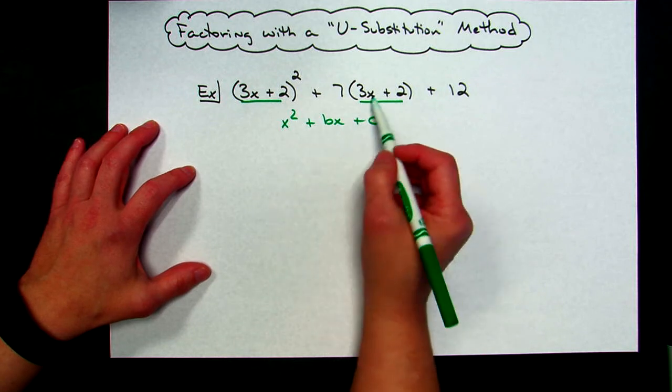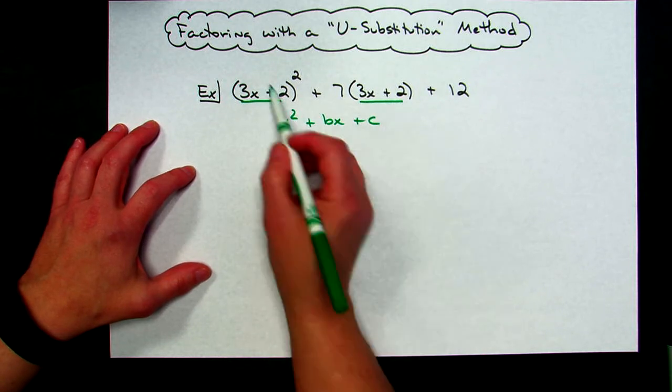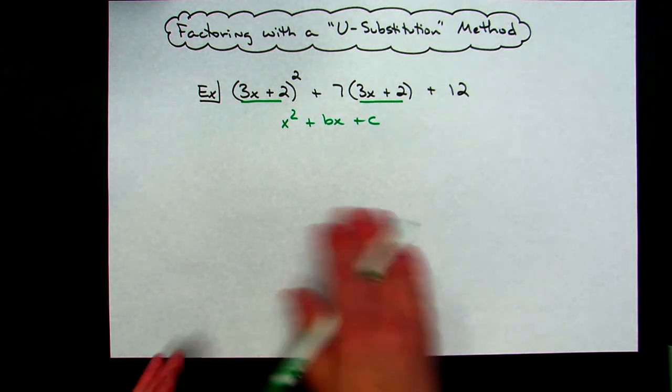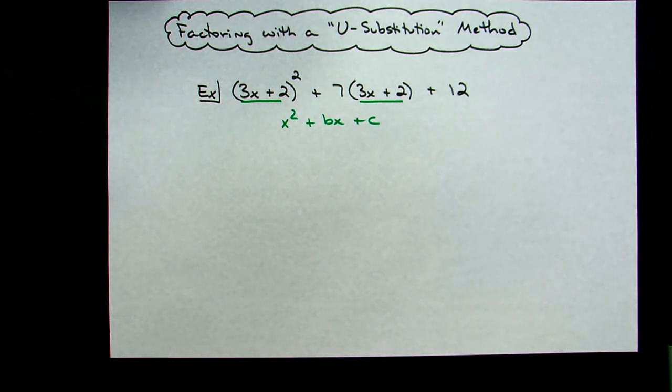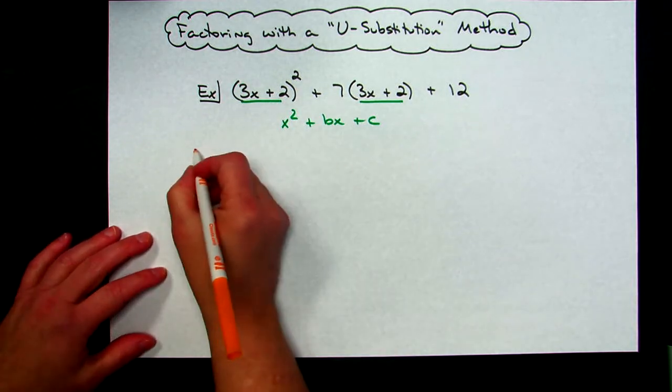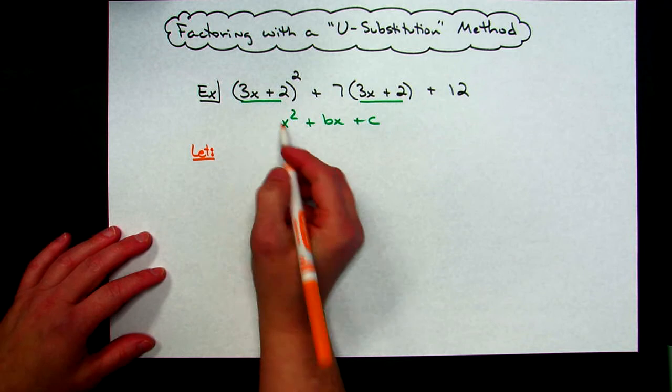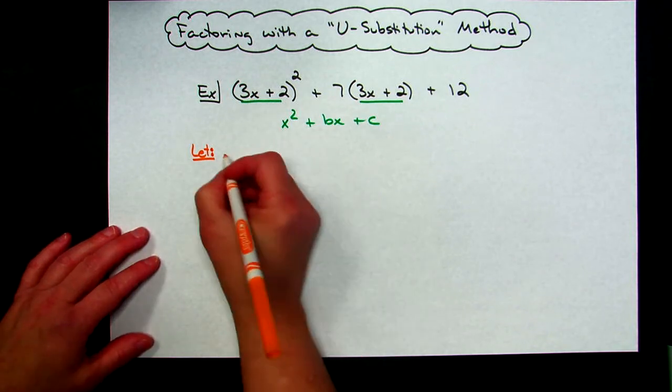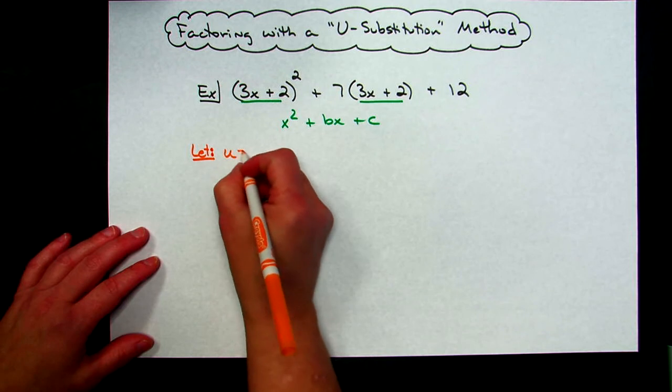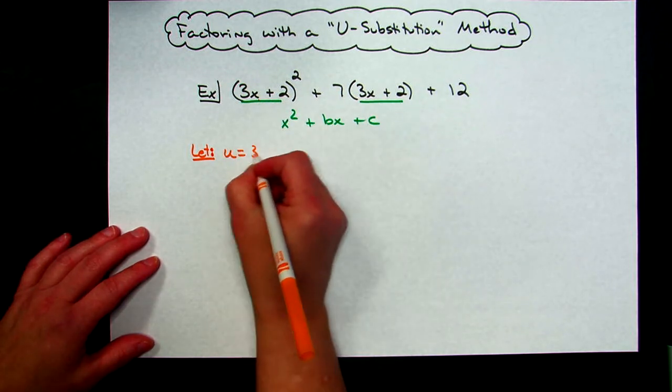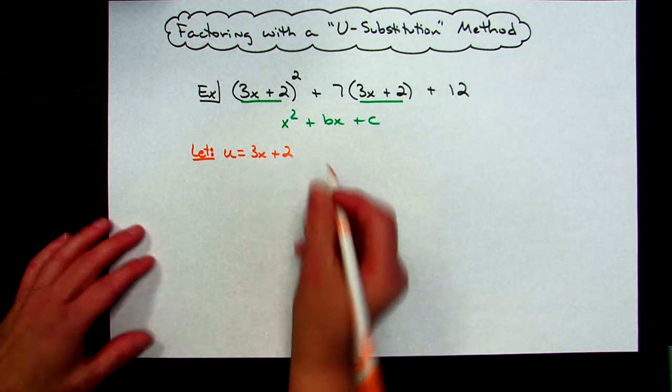So if we can get it down so that we can get rid of this 3x+2, clean it up a little bit, make it look a little neater, then we can easily see that trinomial and then hopefully easily factor from there. So the first thing I'm going to do is I'm going to let, and I've got to pick another variable, I can't pick x because x is already in there, and it's called u substitution, we usually let u equal that. So I'm going to let u equal those two matching terms right there, so I'm going to let u equal the 3x+2.